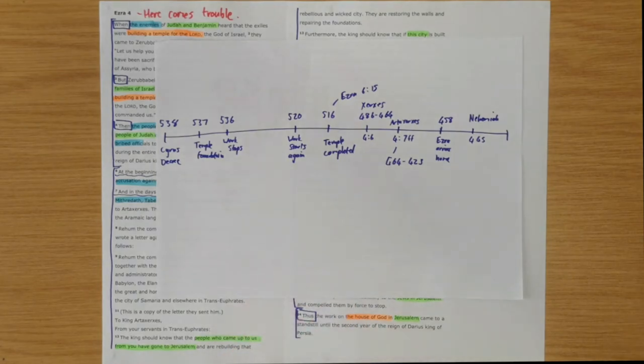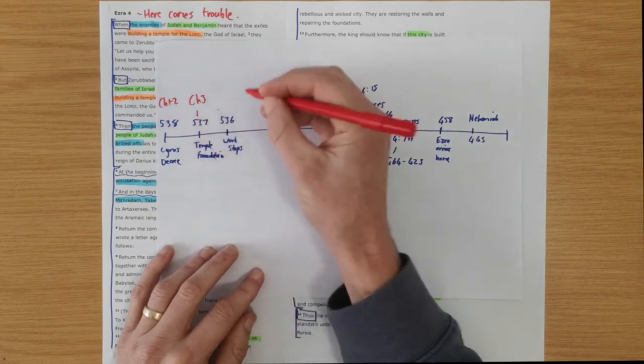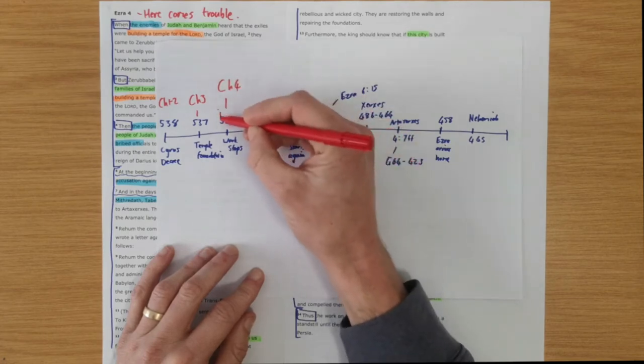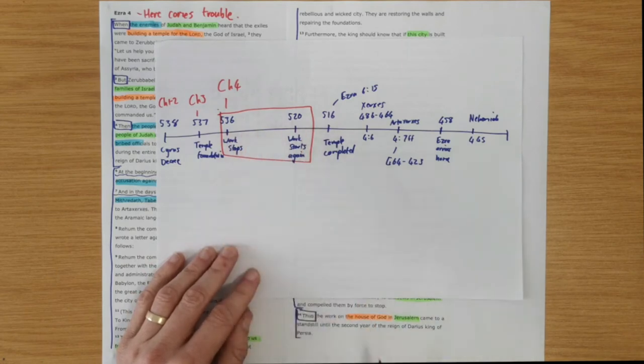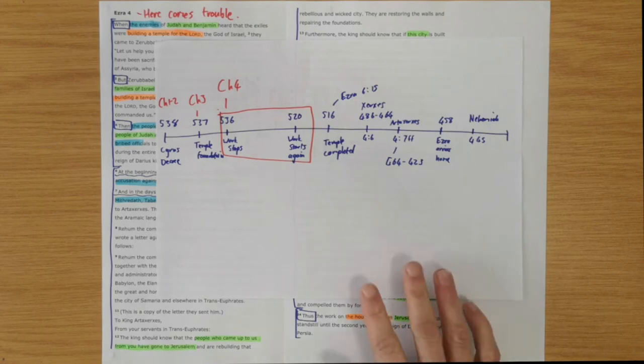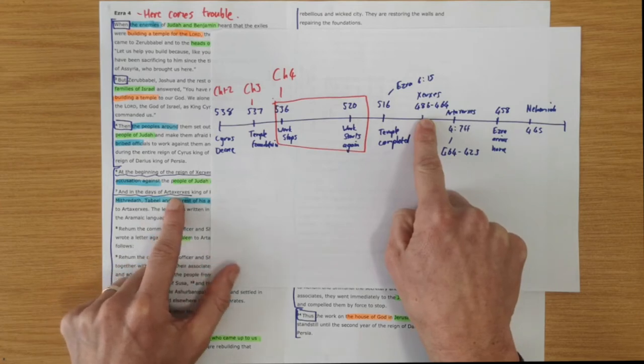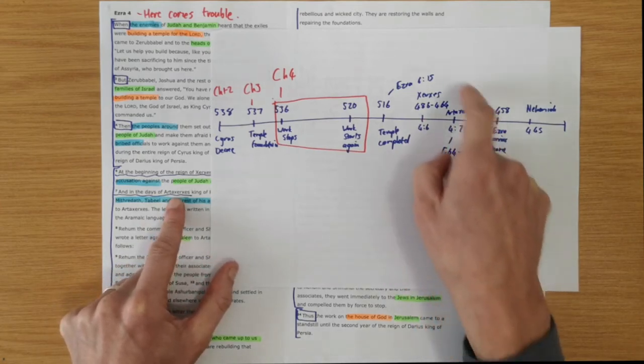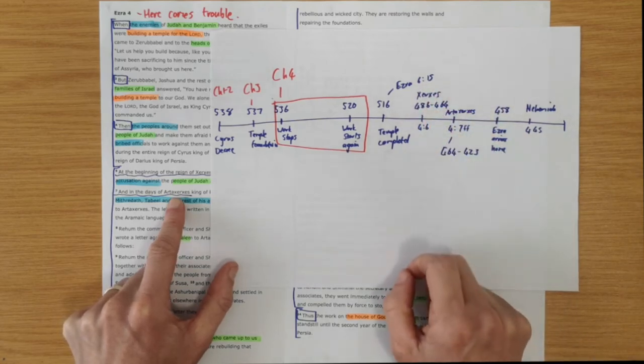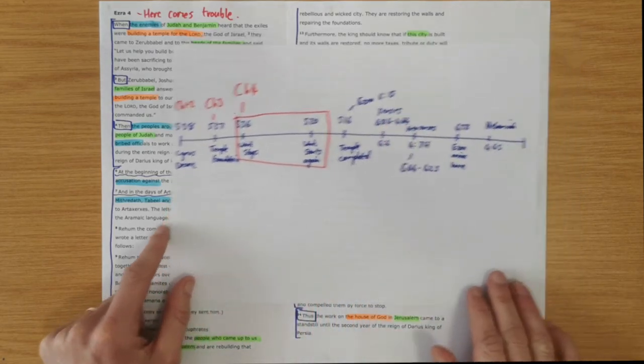So that's kind of a timeline of the events. What we're seeing here in chapter 4 is chapters 1 and 2, then chapter 3, and here we've got chapter 4. But chapter 4 ends by speaking about this time until the second year of the reign of Darius when the work starts again. When we've got in verse 6 the reign of Xerxes, we're jumping ahead, and then verse 7, the reign of Artaxerxes, we're jumping ahead again. The point of this is to show that the opposition to God's work was a norm for God's people. It happened in Cyrus's day, all through Darius's day, in the days of Xerxes and Artaxerxes. Opposition to God's work was a norm.